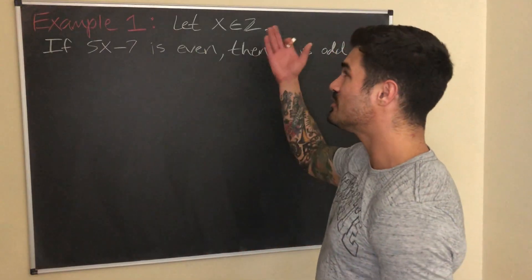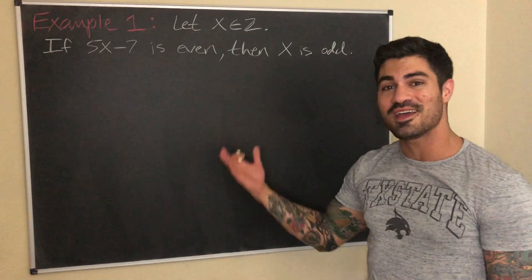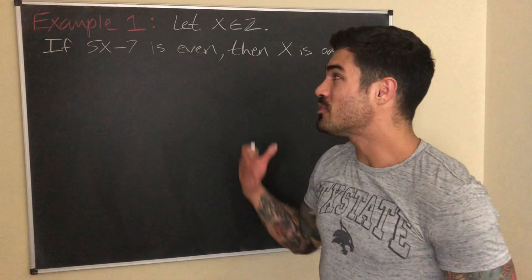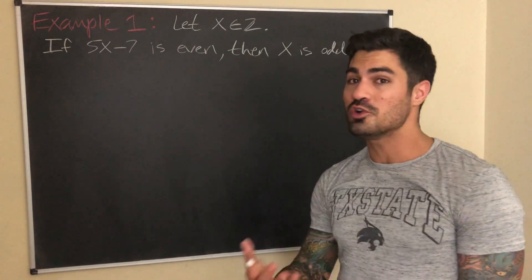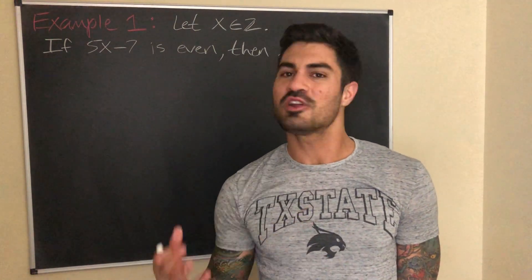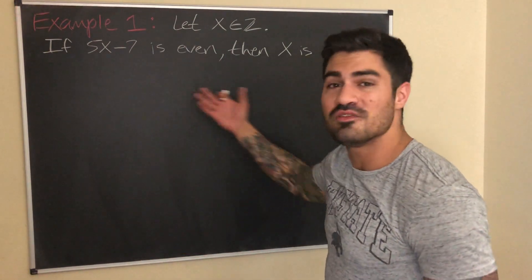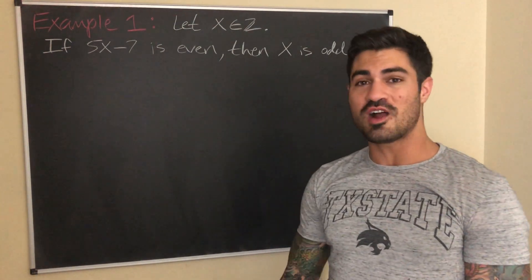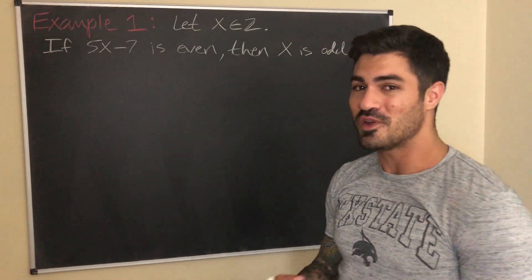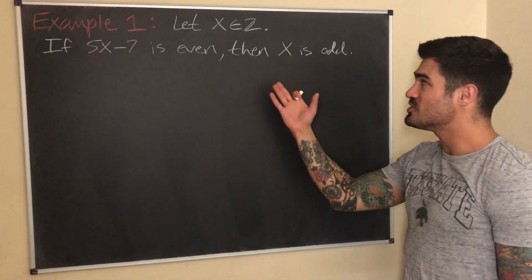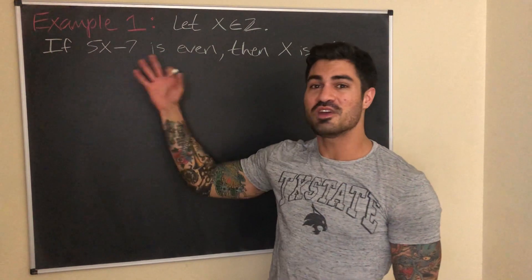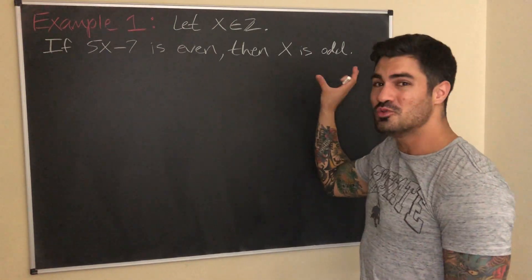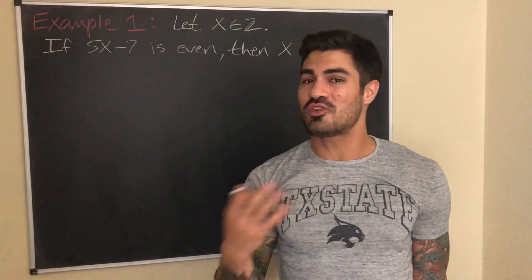Here's our first example: let x be any integer. If 5x minus 7 is even, then x is odd. Now you won't always be told which proof method to use on a quiz or exam, and figuring that out is the trickiest part. Looking at this, I would try proof by contrapositive first. What jumps out is that the conclusion — x — is simpler than the premise — 5x minus 7. In general, when the conclusion is simpler, the contrapositive may be a good approach.